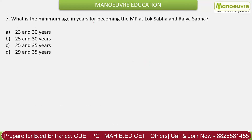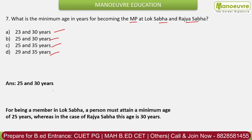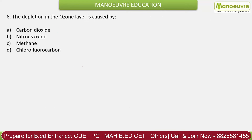Question 7: What is the minimum age in years for becoming an MP in Lok Sabha and Rajya Sabha? Options: 23 and 30, 25 and 30, 25 and 35, 29 and 35. The correct answer is 25 and 30 years. To become an MP of Lok Sabha you need 25 years of age, and 30 years for Rajya Sabha. The minimum age for local body elections is 21 years.